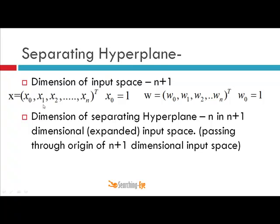There is your input vector feature and these are your parameters and the hyperplane will be of dimension n. Your input space is of dimension n plus 1 and will pass through the origin of n plus 1 dimensional input space.